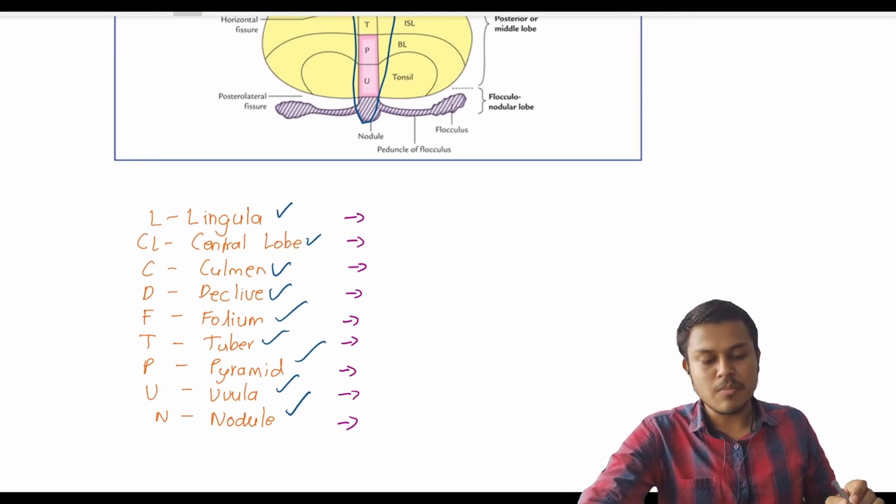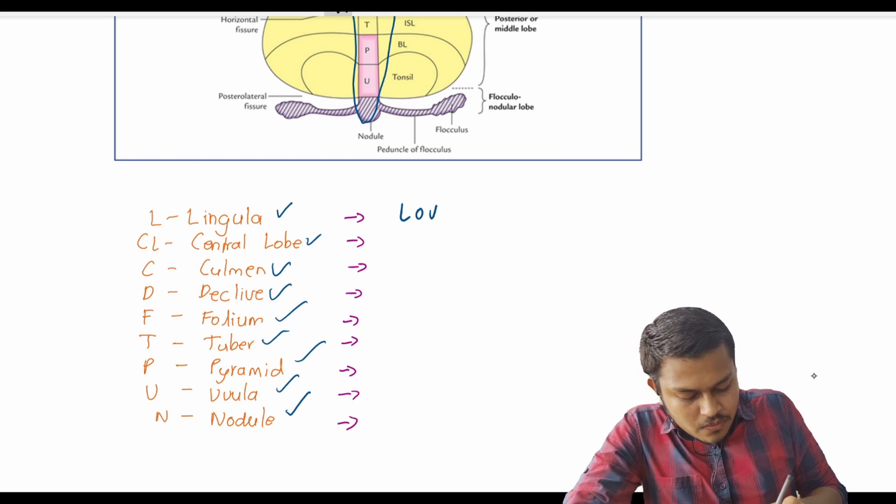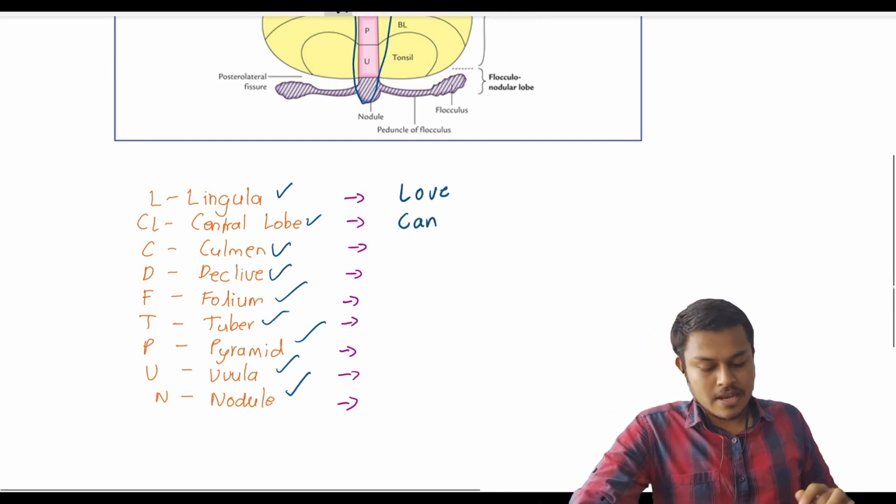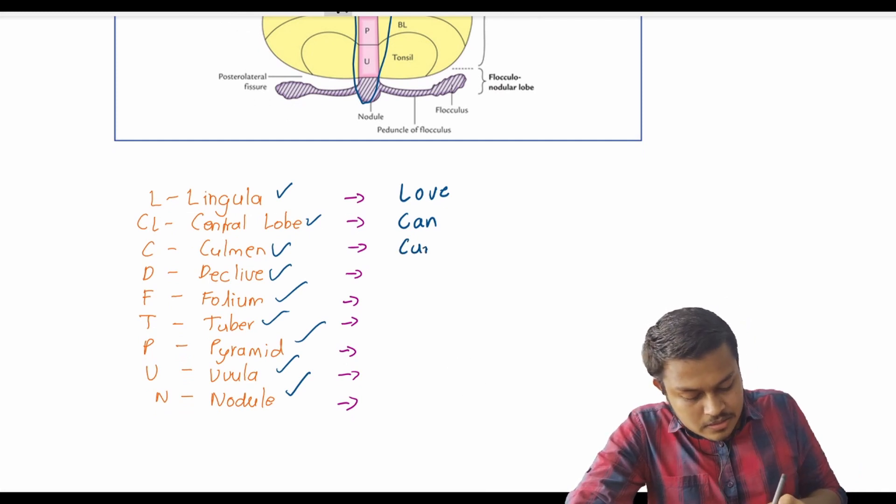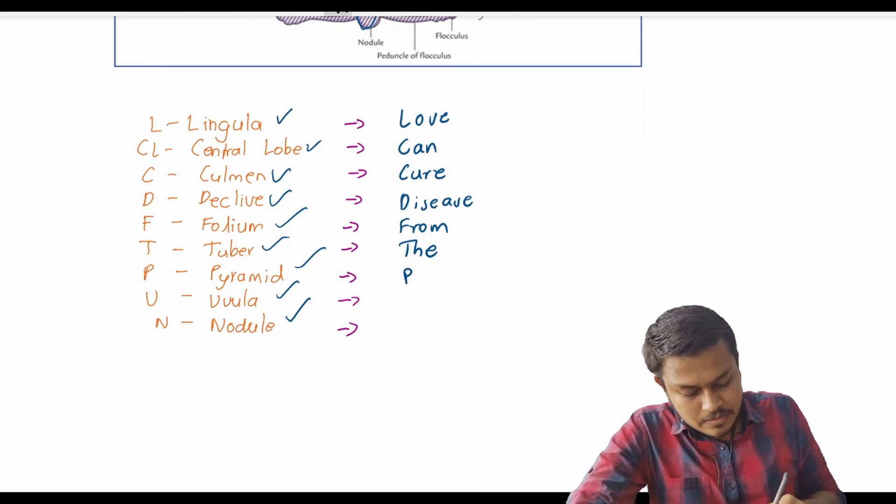I will start with the mnemonic. Here L for love and CL for can, then cure disease from the patient unknowingly.